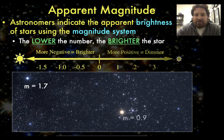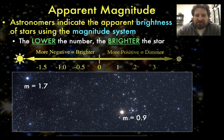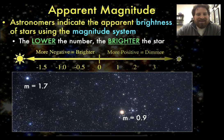The magnitude of Aldebaran is 0.9, or approximately 1. So if we imagine this star has a magnitude of approximately 2 and Aldebaran has a magnitude of approximately 1, we can say that the magnitude-2 star is dimmer than the magnitude-1 star. All the other stars in this image are dimmer than these two stars, so any other star here will have an apparent magnitude greater than 1.7, because larger numbers mean dimmer.